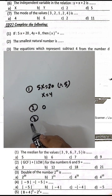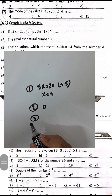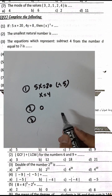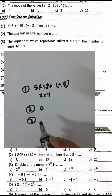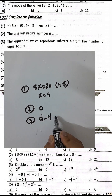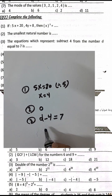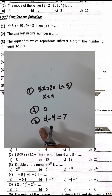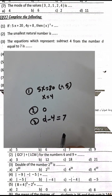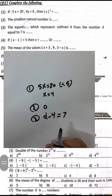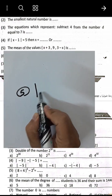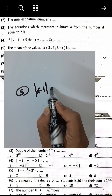Question 3: The equation that represents 'subtract 4 from the number d equals 7' is d minus 4 equals 7.